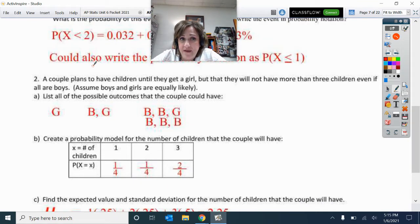Next, a couple is going to have children until they get a girl, but they're not going to have more than three children. So they'll stop by the time they get to three, even if all of them are boys. Assuming that boys and girls are equally likely, list all the possible ways that the couple can have children. They're going to have children until they get a girl. So here we go, just like first child out is a girl, then they're done.